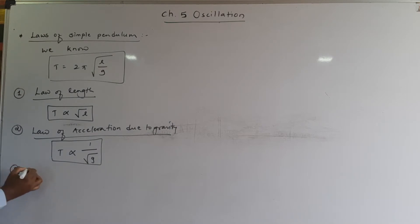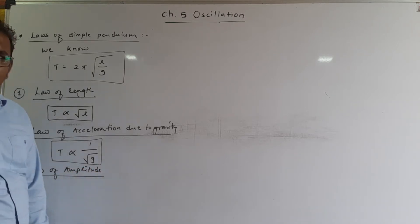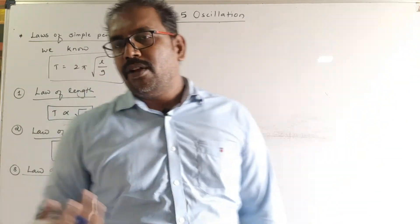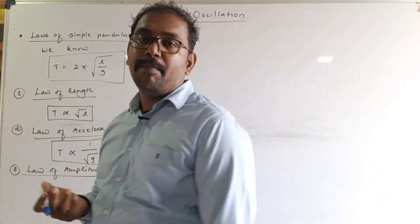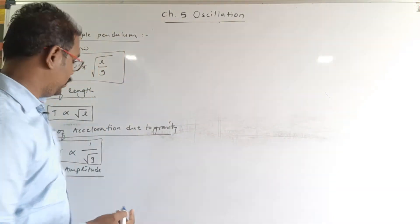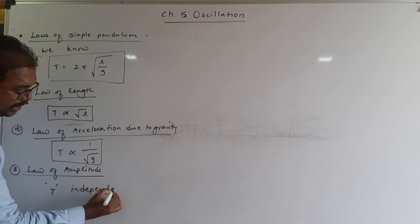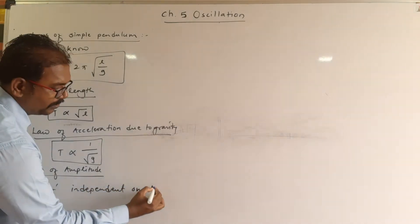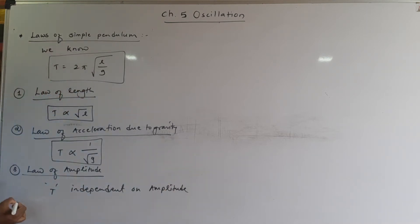The third law is called the law of amplitude. The period of a simple pendulum does not depend on the amplitude of oscillation of the bob. So we write T is independent of the amplitude of oscillation.